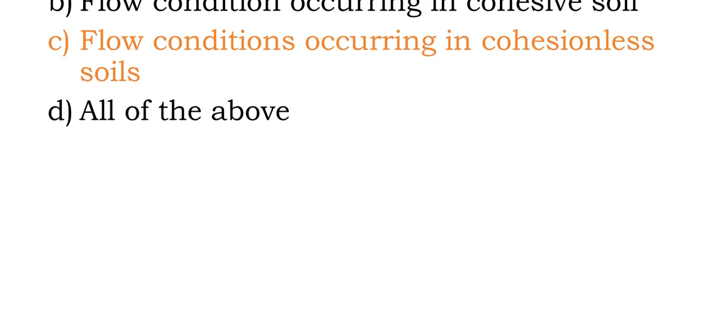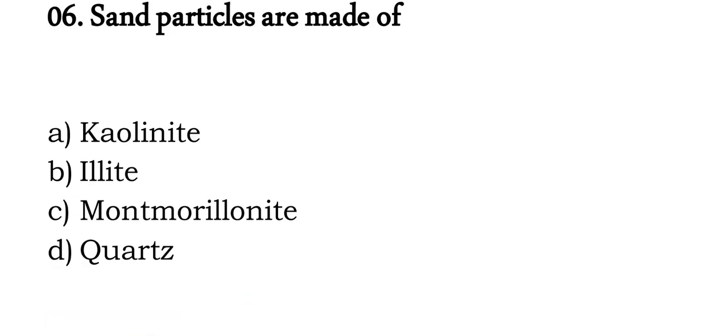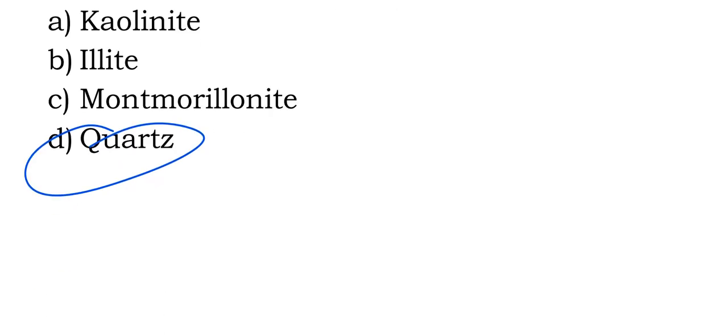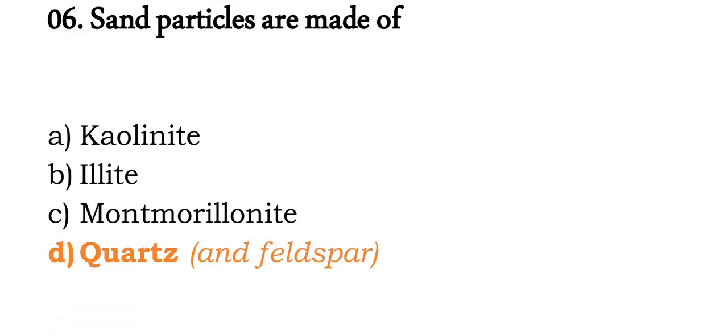Question 6: sand particles are made up of mainly quartz. Other minerals like kaolinite, illite, and montmorillonite are clay minerals, not sand-forming minerals. So sand particles are primarily composed of quartz and feldspar.